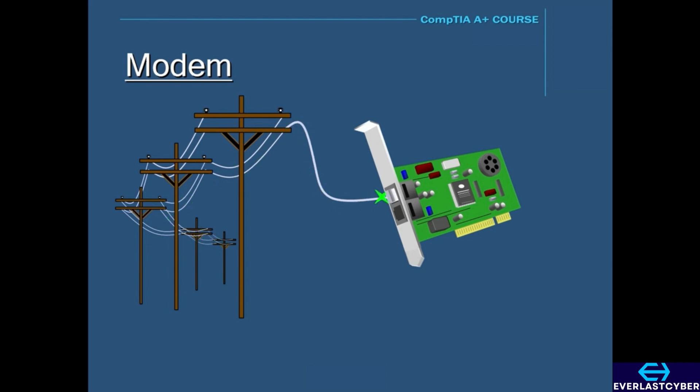So when the analog data comes in from the telephone lines, the modem's job is to convert it into a digital form so the computer can understand it. That is basically what a modem does: it converts analog data into digital data.